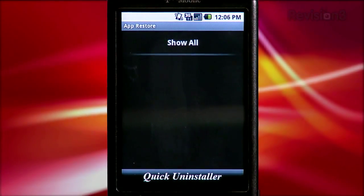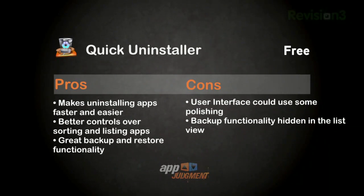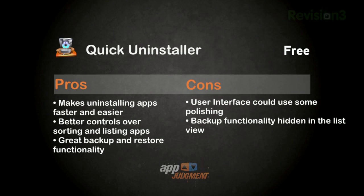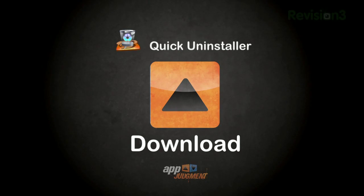Quick Uninstaller makes the uninstall process simple and easy. You get controls over how you sort and list your apps, and the backup and restore functionality can be a lifesaver. That said, it could use some polish in the user interface department, as the backup functionality was hidden unless you moved to the list view. Some apps are so simple and easy that they're a no-brainer — download this app. It will make managing the apps on your phone so much easier.